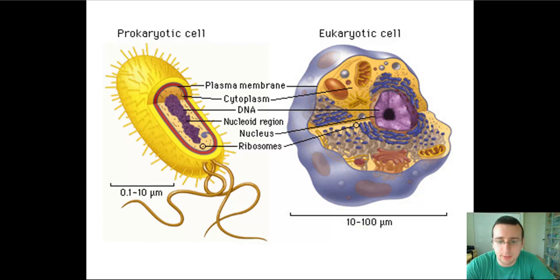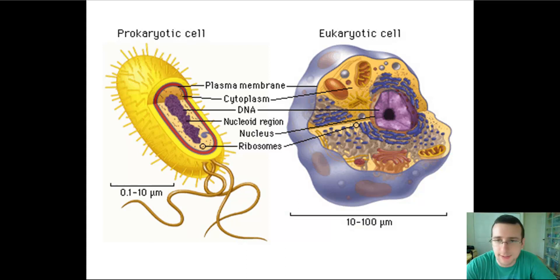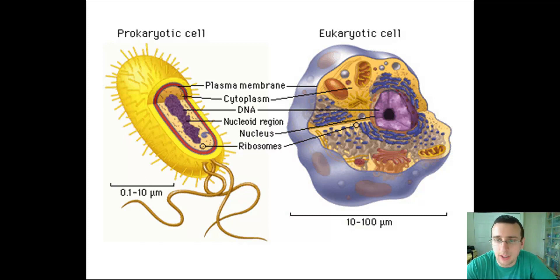Another thing we have to talk about in terms of protein synthesis is how it's different between prokaryotic cells and eukaryotic cells. Because prokaryotic cells are so much simpler, they don't have all the mechanisms that eukaryotic cells have in order to change, process, and actually make the proteins.